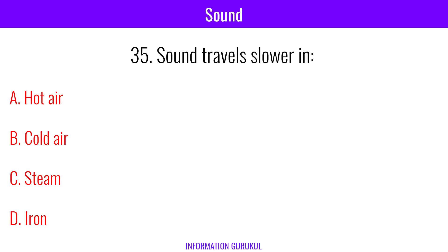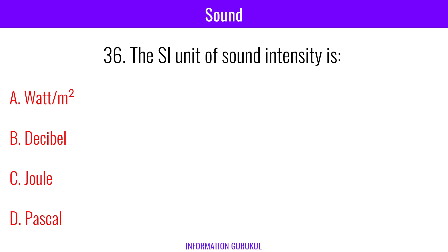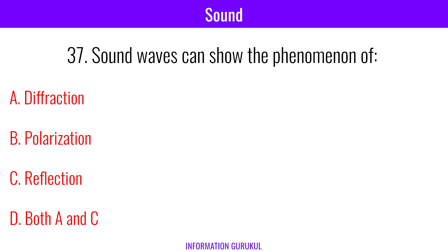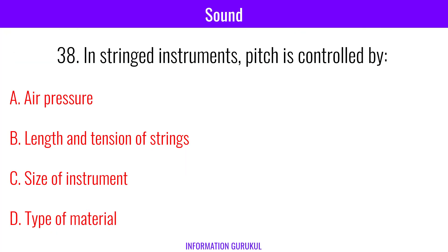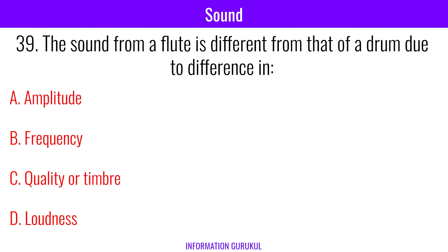Sound travels slower in cold air. The SI unit of sound intensity is watt per meter square. Sound waves can show the phenomenon of diffraction and reflection. In stringed instruments, pitch is controlled by the length and tension of strings. The sound from a flute is different from that of a drum due to difference in quality or timbre.